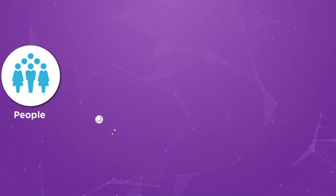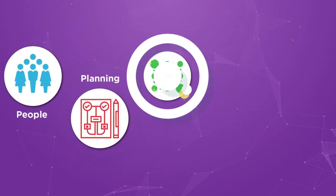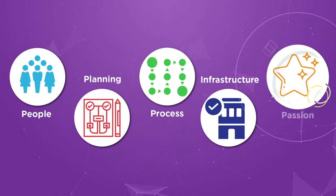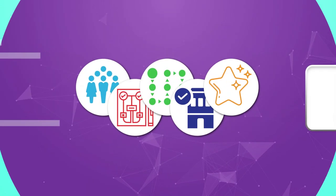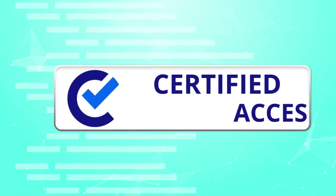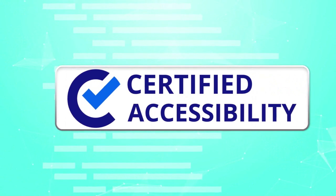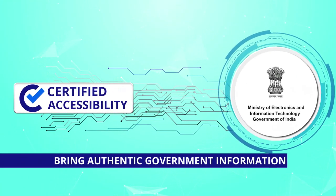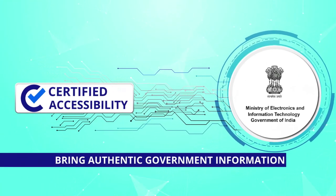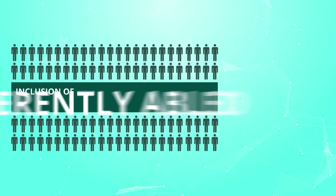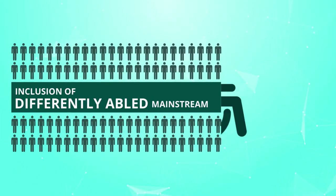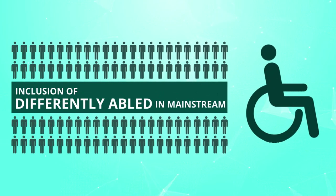People, planning, processes, infrastructure and passion made the SWAS journey exemplary. Certified accessibility helps to bring authentic and updated government information within reach of all citizens and facilitates inclusion of the differently abled in the mainstream.